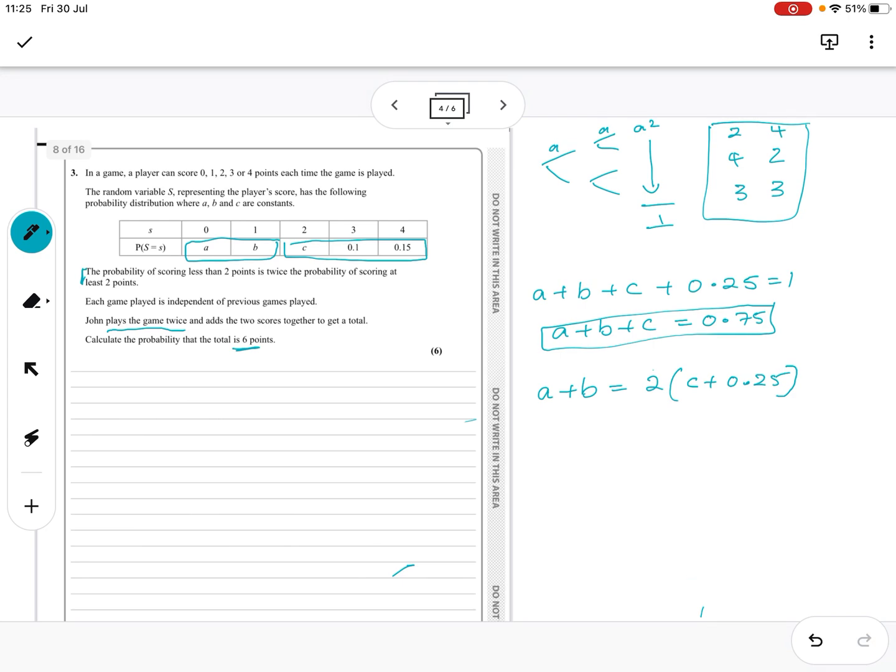And this one could be changed to A plus B equals 0.75 minus C. So because they're both A and B, I can say 0.75 minus C has got to equal, I'm going to multiply out this bracket, 2C plus 0.50. So then if I add C, I'm going to get 3C on this side equals 0.25. And 0.25 divided by 3 gives me a fraction. So C equals 1 twelfth.